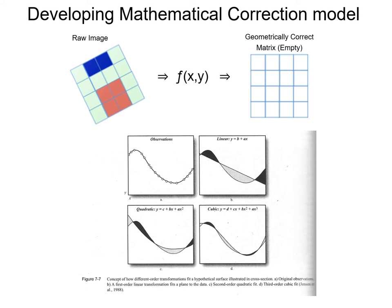We might use a second-order polynomial — a quadratic equation — which gives a parabolic shape, but that might not fit the observations very well. Increasing to a cubic relationship — a third-order polynomial — gives a better fit. The order of transformation is just the order of the polynomial used. Usually we use first-order or second-order transformations.